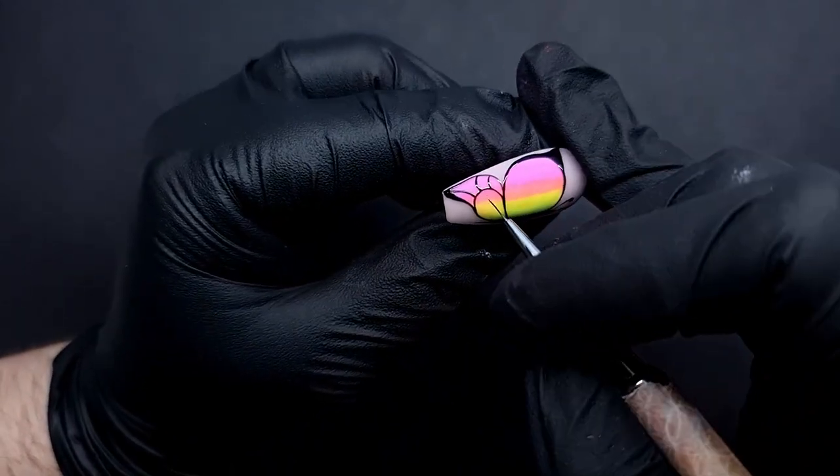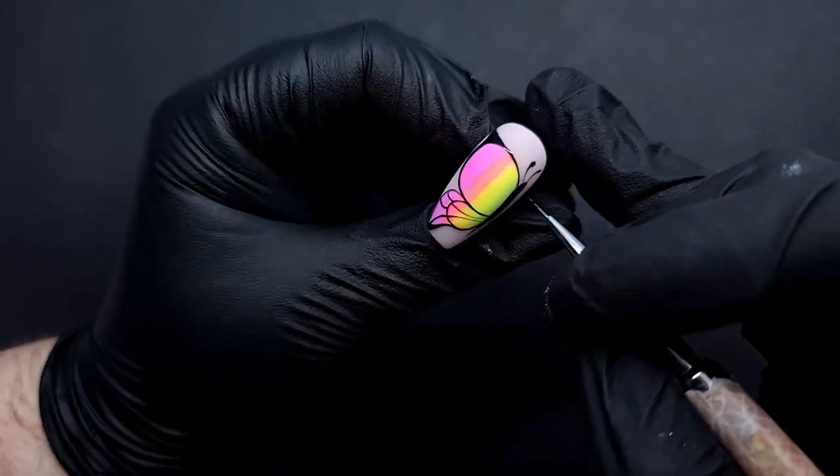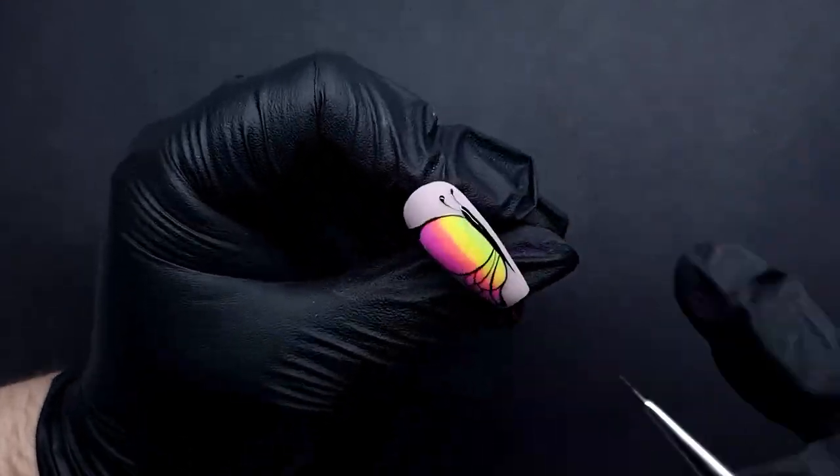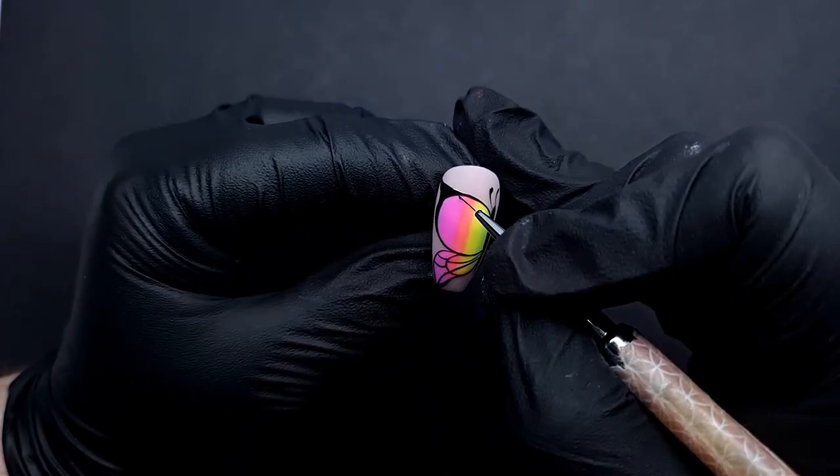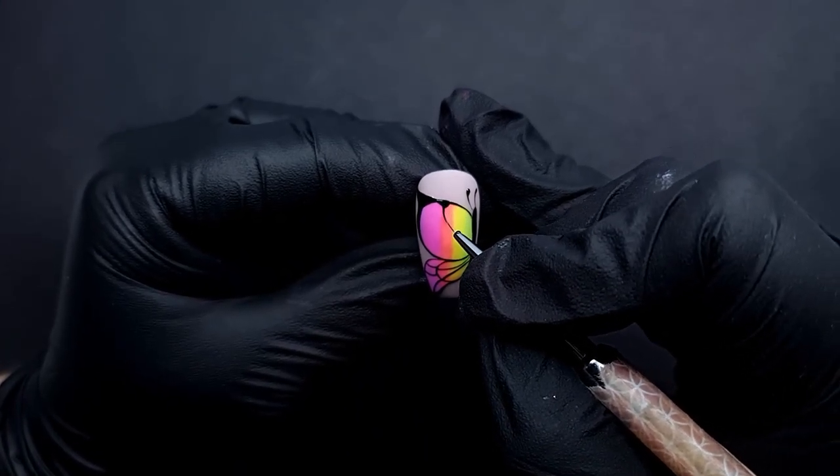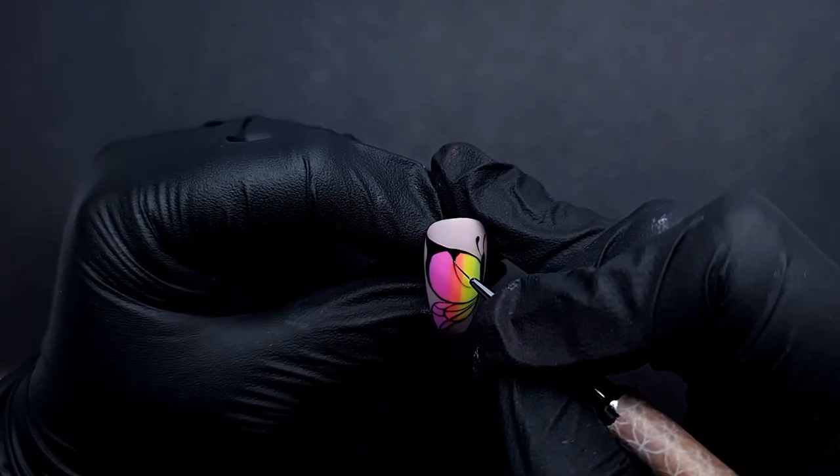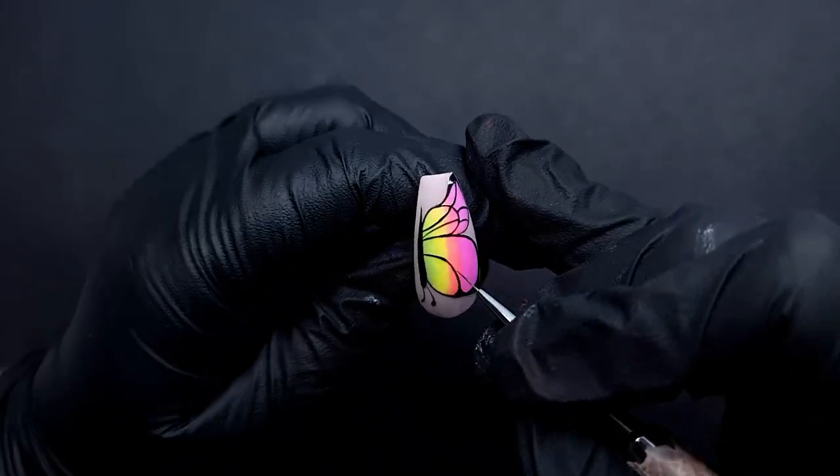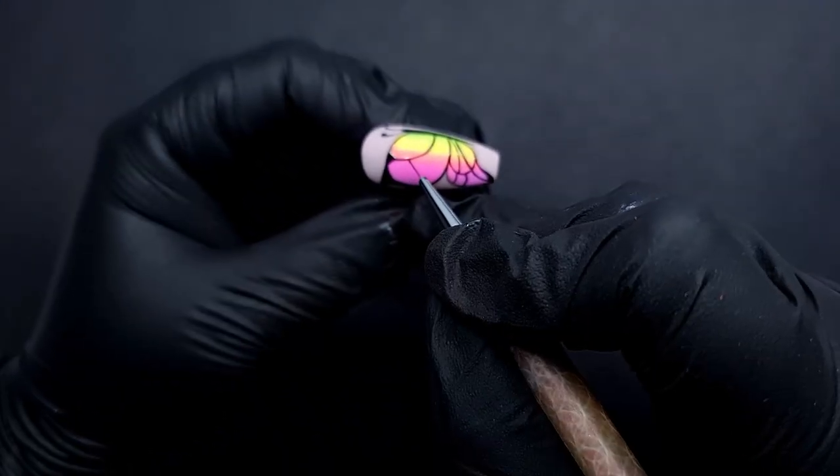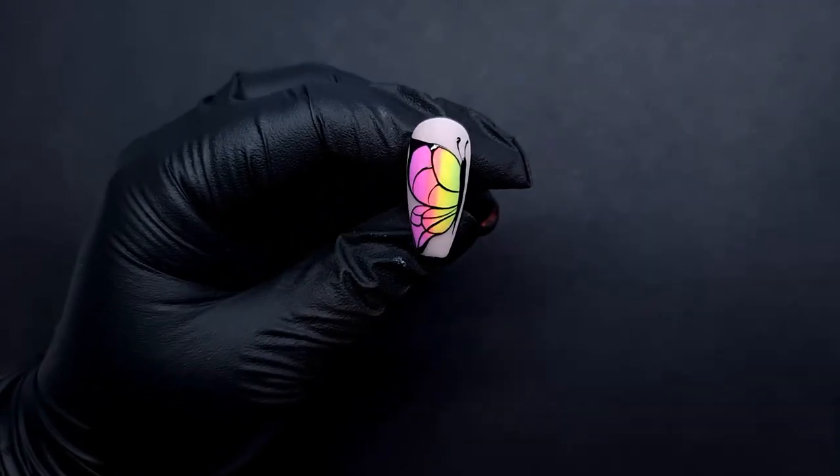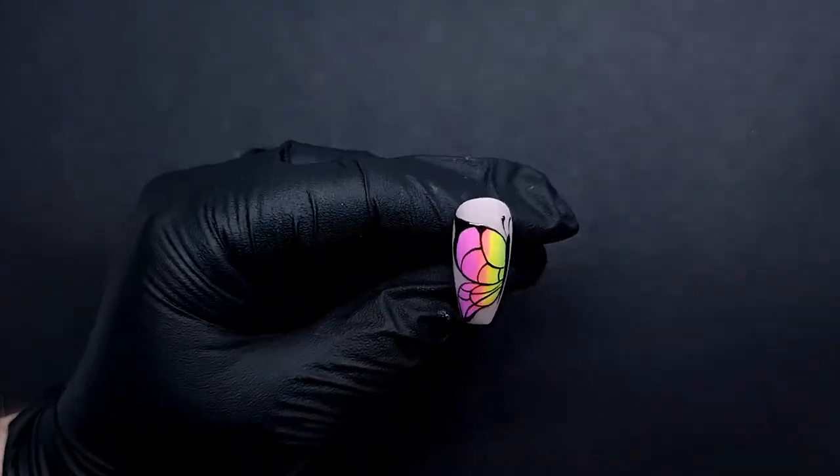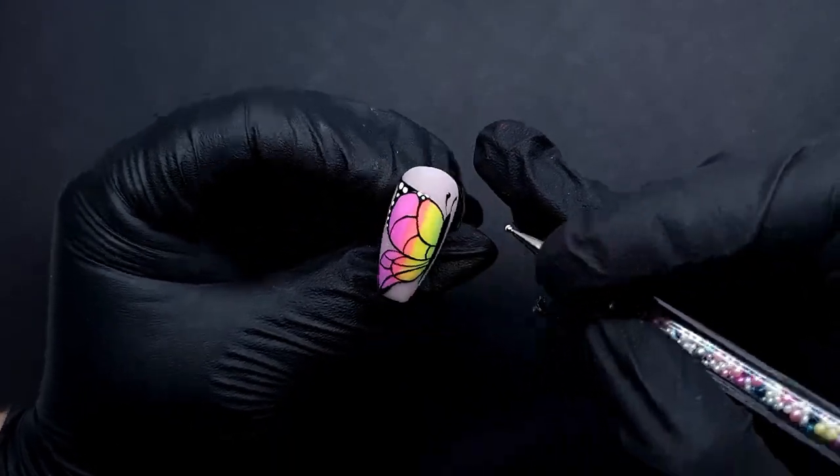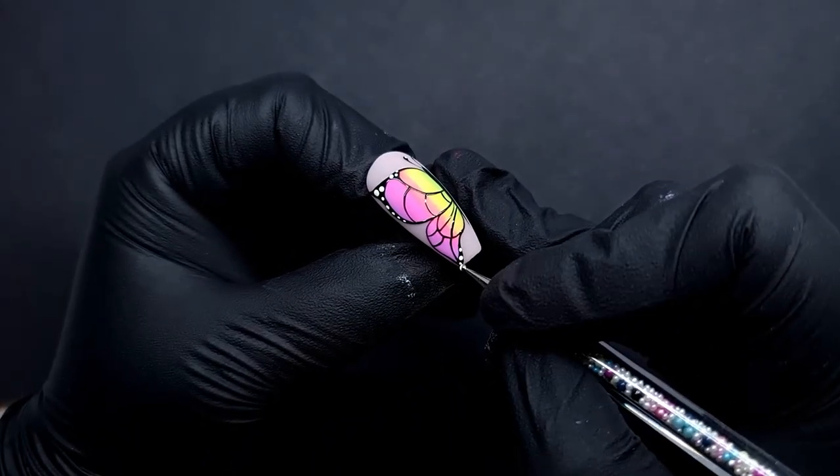I'm just adding more details to the wings. You can go crazy with this, you don't have to actually do it as I do. You can add anything you want, you can add little hearts. It's your butterfly, do it however you want. I really like doing butterflies because the sky's the limit. Now I'm adding some white dots with my dotting tools just because I wanted to break up that bold black pattern.